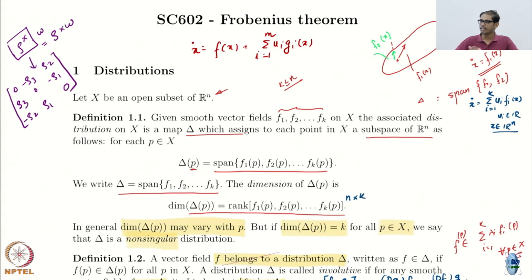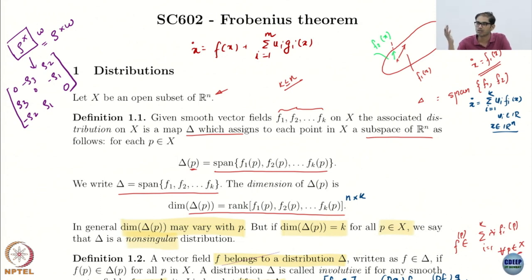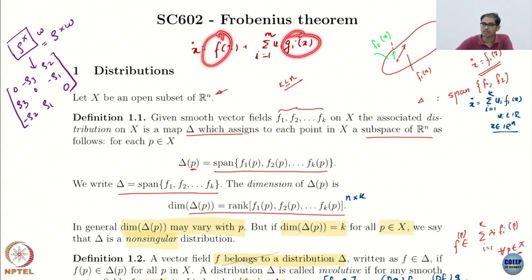Your typical dynamics has multiple controls, not just one control. So you have a drift vector field and you have multiple control vector fields. We call them vector fields because at every point they give you a direction.